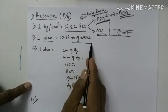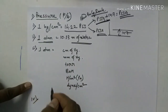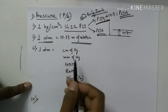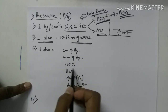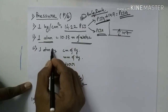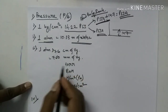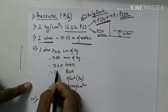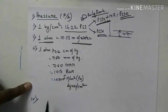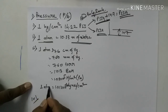The next important pressure conversion is atmospheric pressure expressed in various units. One atmospheric pressure equals 10 meters of water gauge. One atm also equals 76 centimeters of mercury, 760 millimeters of mercury, 760 Torr, 1.013 bar, and 1.013 × 10⁵ Newton per meter square (Pascals). Remember these conversions for your mechanical engineering interview or written exam.